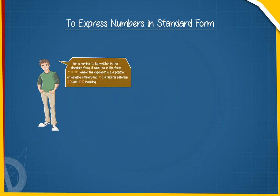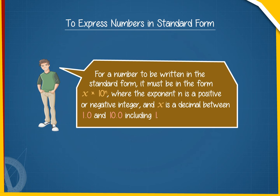For a number to be written in standard form, it must be in the form x × 10ⁿ, where the exponent n is a positive or negative integer and x is a decimal between 1.0 and 10.0, including 1.